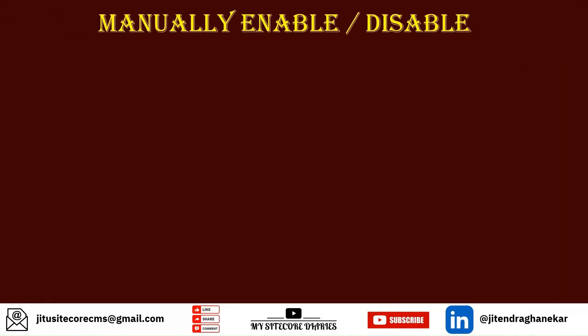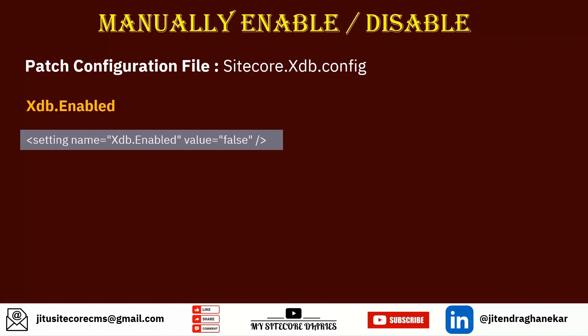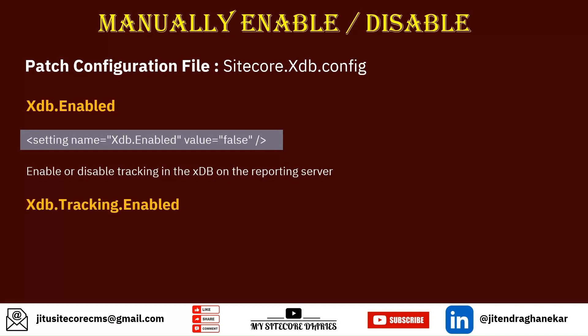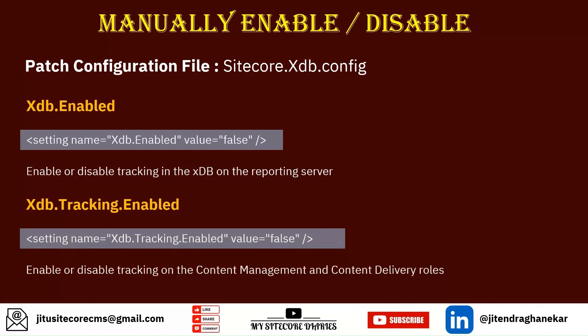Let's see how to manually enable or disable the XDB. In the core XDB config file, you need to update two properties. The first is Xdb.Enabled — set it to false to disable XDB, or true to enable it; this enables or disables the XDB on the reporting server. The second is Xdb.Tracking.Enabled — set to true or false; this enables or disables tracking on the content management and content delivery servers.